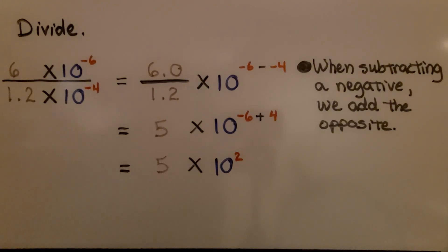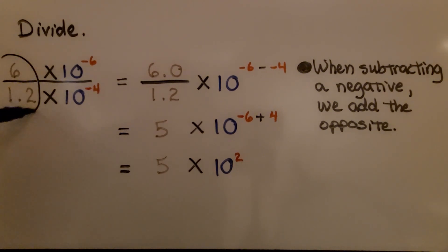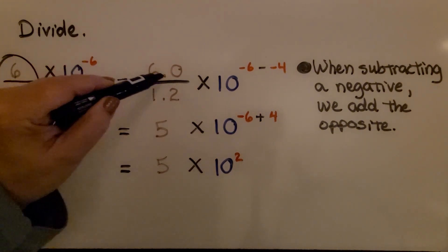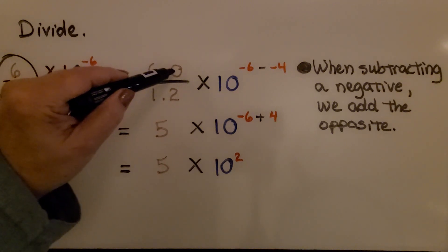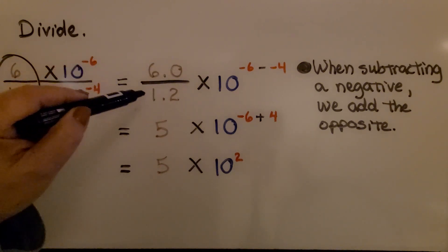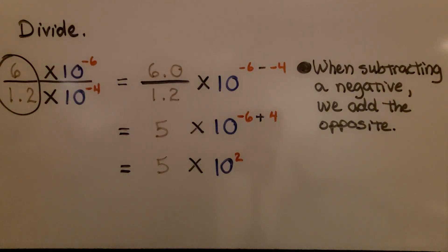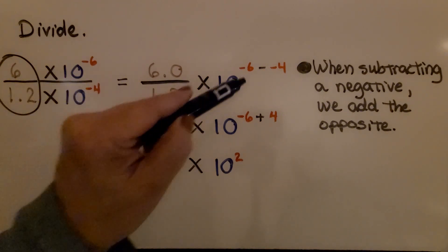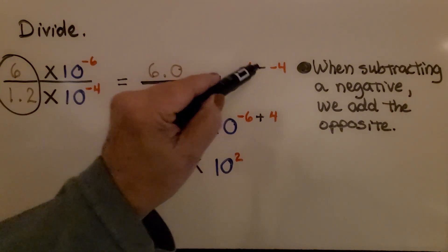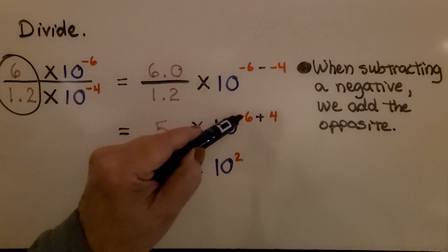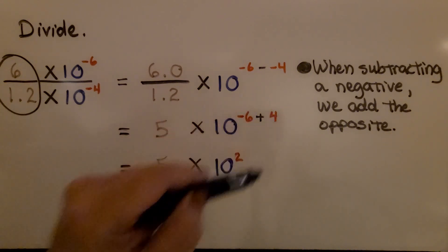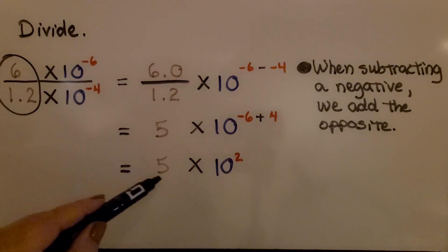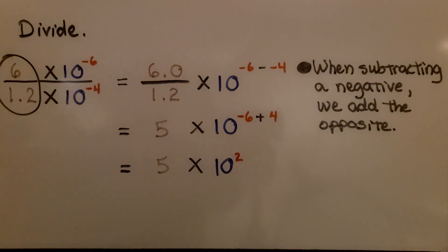Here we need to divide again. We're going to do 6 divided by 1.2. So we can write it with a trailing zero in the tenths place. We have 6.0 divided by 1.2. We do the division and we get 5. Now here we have a negative 6 minus a negative 4. Remember, when subtracting a negative, we add the opposite. So we have negative 6 plus 4. That's going to give us 5 times 10 raised to the 2nd power.